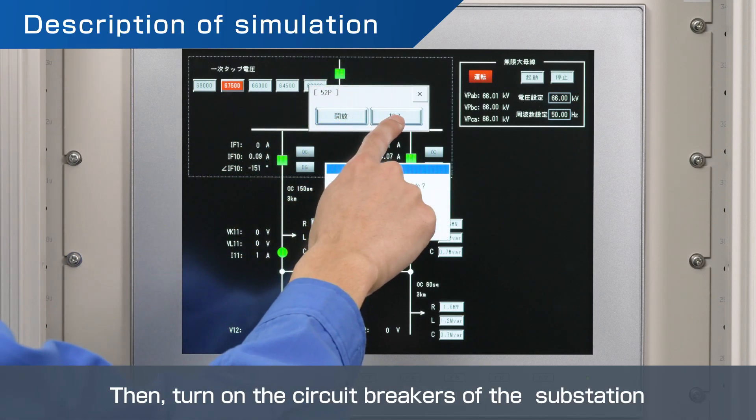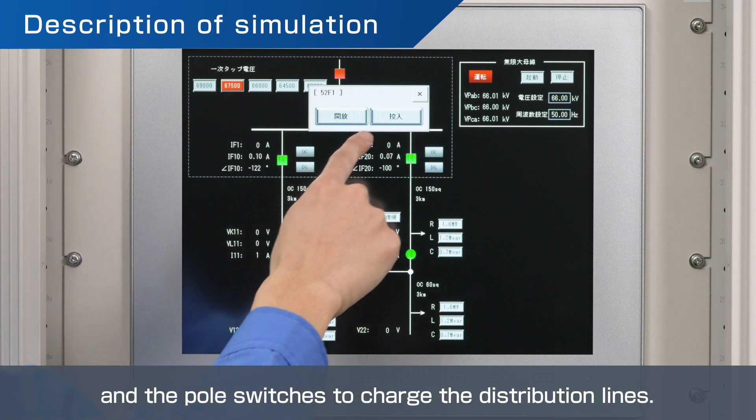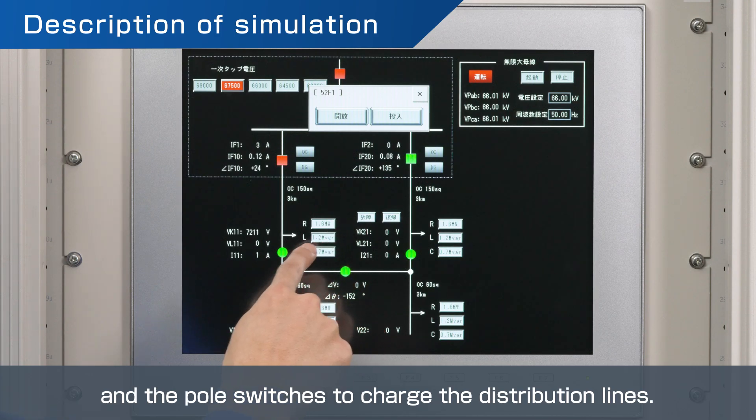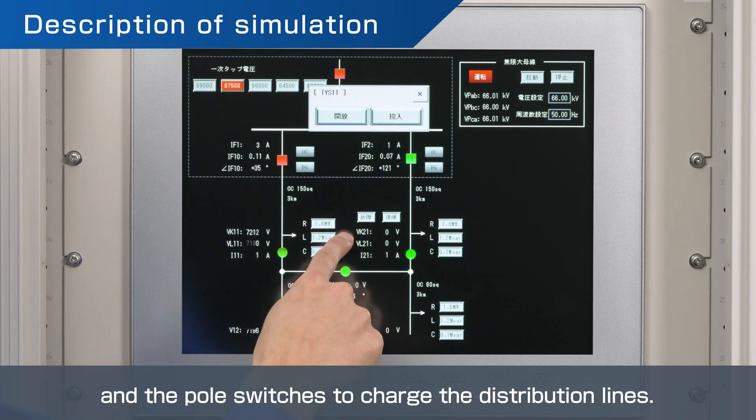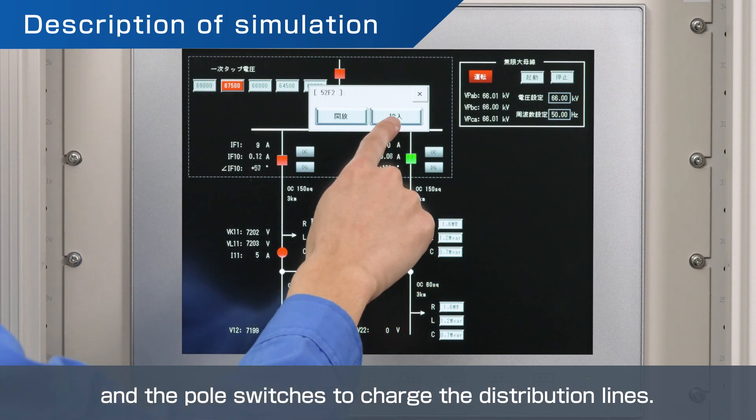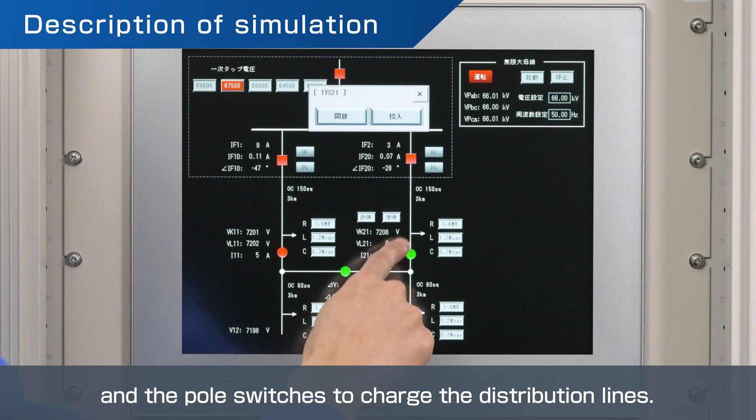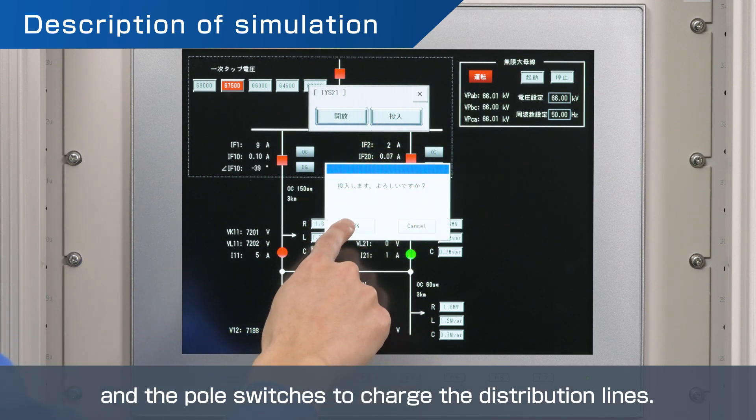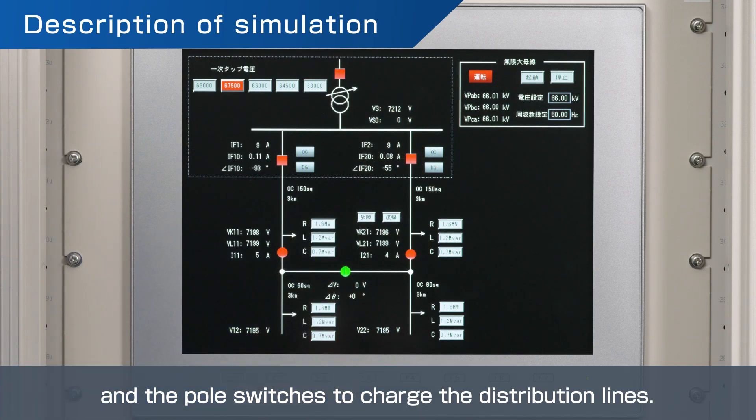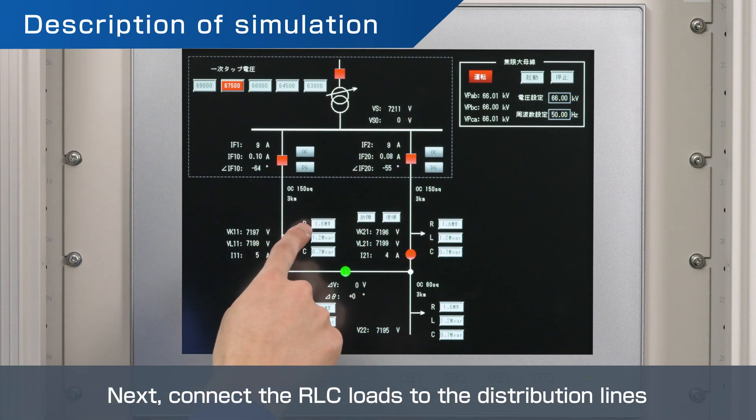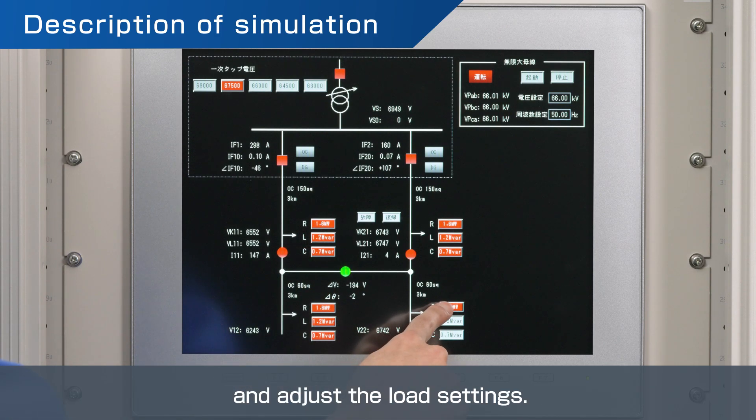Then, turn on the circuit breakers of the substation. Next, connect the RLC loads to the distribution lines and adjust the load settings.